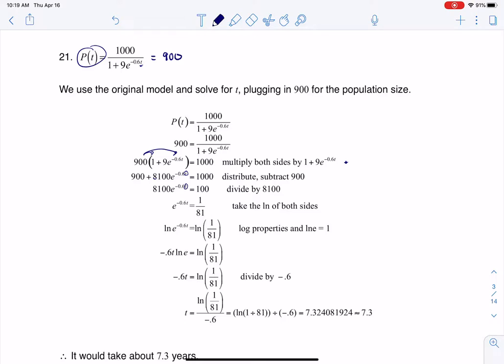So if we look at where we are now, I still want to get that t all by itself, so I need to isolate my exponential expression. I want to isolate e to the negative 0.6t because ultimately I want to log it, but I can't log it until it's isolated, so that's why I divided both sides by 8100 here.